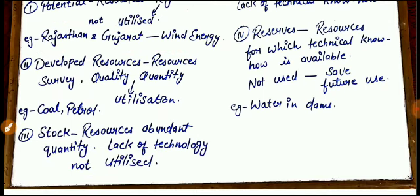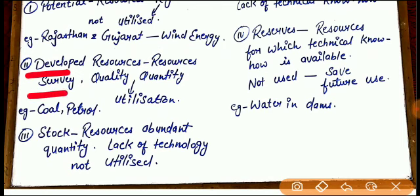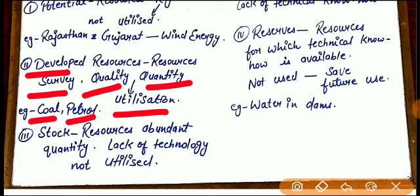The next type of resources is Developed Resources. What are called Developed Resources? Developed Resources are the resources which have been surveyed and their quality and quantity both have been estimated for their utilization — meaning the resources which are used nowadays to fulfill the needs of humans. You can see Coal and Petrol; they are used in a huge form nowadays.